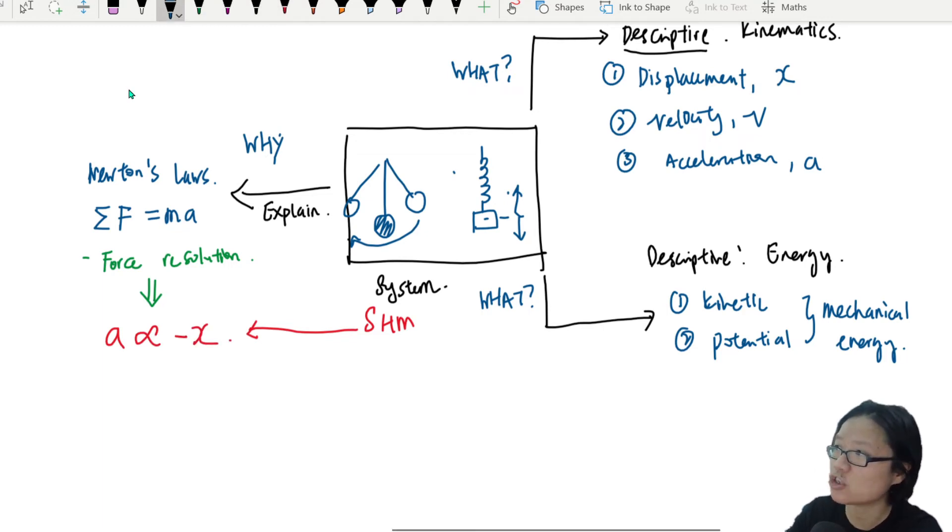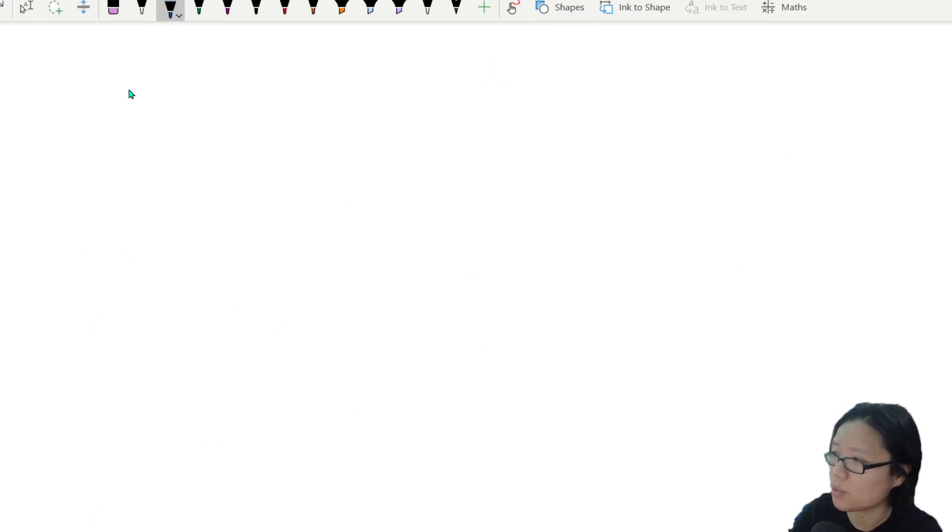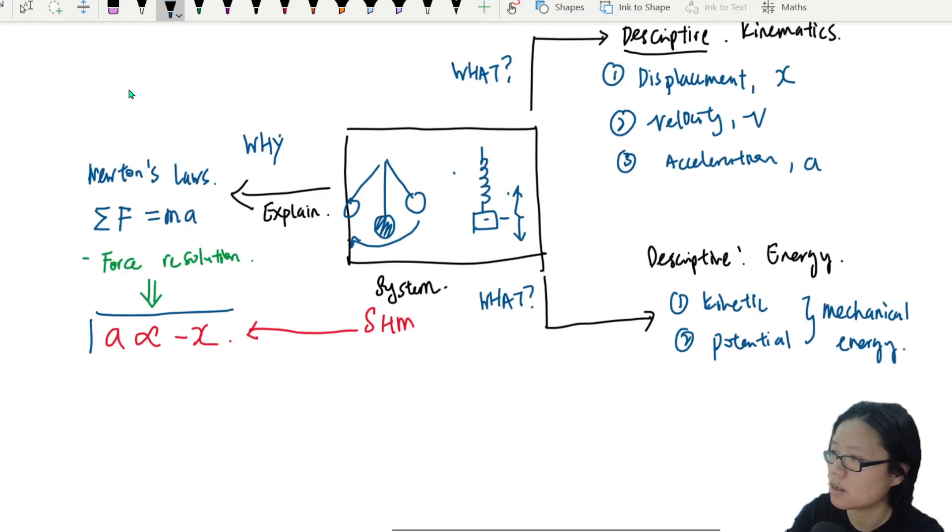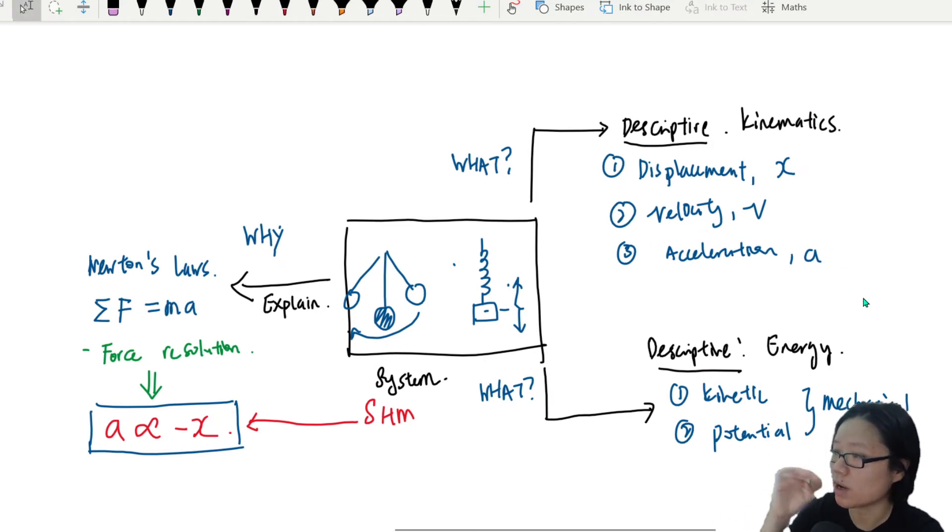So a system in simple harmonic motion that we have covered so far includes our pendulum. So if I showed you just now in the slide introduction, you have a pendulum swinging left and right. You may have a spring oscillating up and down, and you may have other examples. But how do we know something is in simple harmonic motion, SHM?